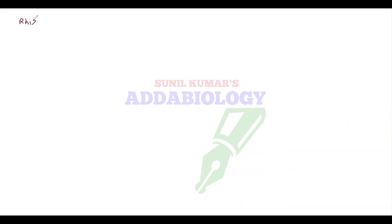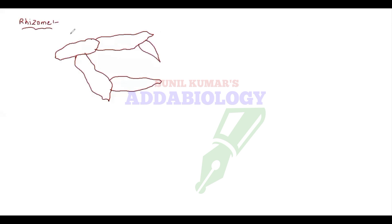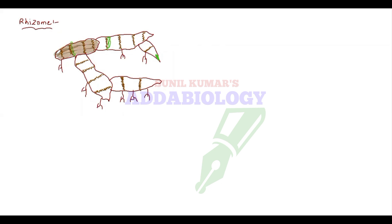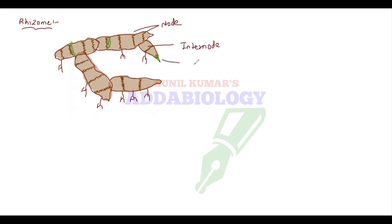Let's draw the diagram for rhizome. Rhizome is basically ginger that we normally have at home. When you look at ginger it shows some dark lines — these are nodes, and in between the nodes there is space called internode. It has a green leafy structure and adventitious roots. Remember, rhizome is an underground stem that modifies because conditions are unfavorable, so they store food. In the diagram we label nodes, internodes, scaly leaves, and adventitious roots.